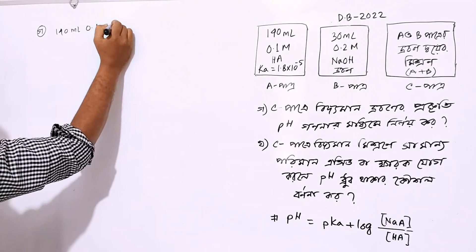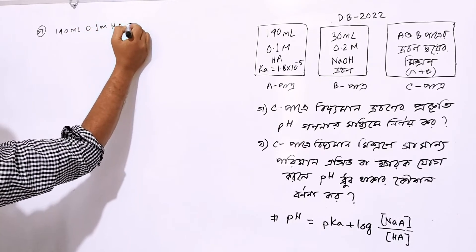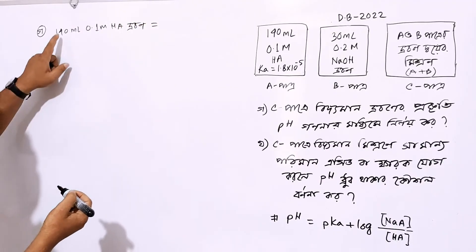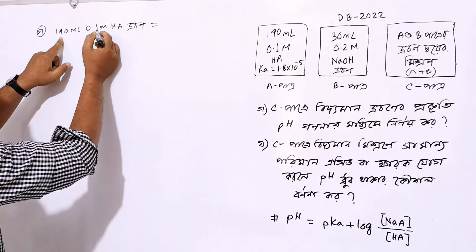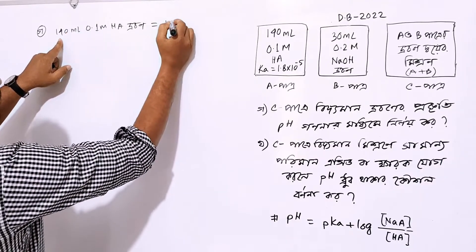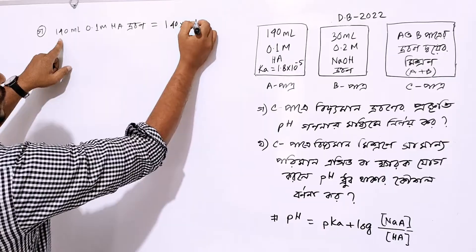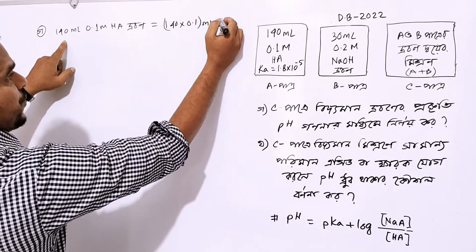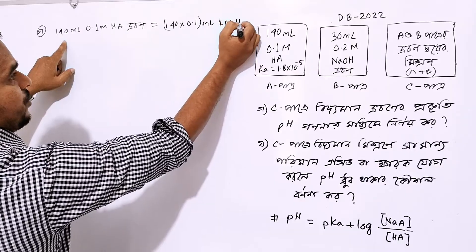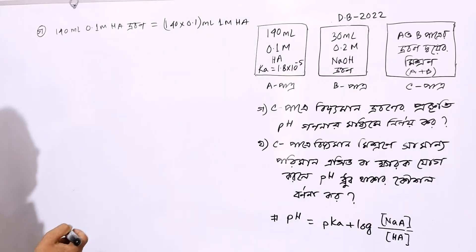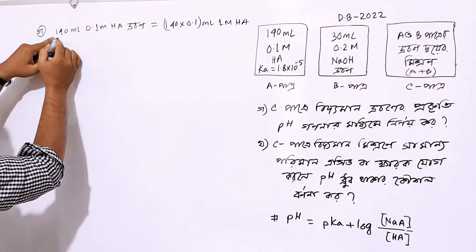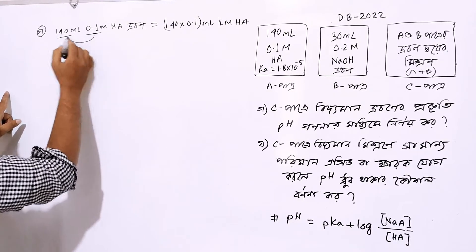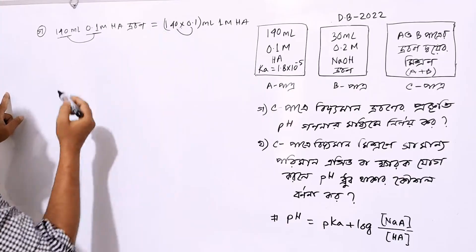0.1 ml, 0.1%, 1 molar acid — 0.01 molar acid concentration.